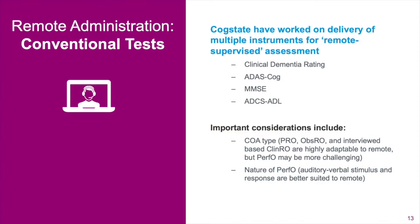It is also possible to adapt many conventional assessments for remote administration. In the case of Alzheimer's disease trials, several interview-based or questionnaire assessments, such as the neuropsychiatric inventory, were intended from the outset to be delivered in person and over the telephone. Additionally, other tools such as the clinical dementia rating scale have been adapted for use remotely and equivalence data has been published. In general, most patient reported, observer reported, and clinician reported outcome assessments do have the potential for remote adaptation.